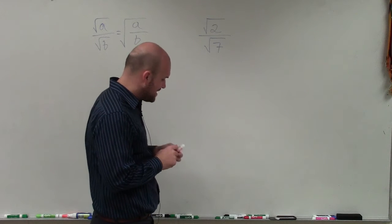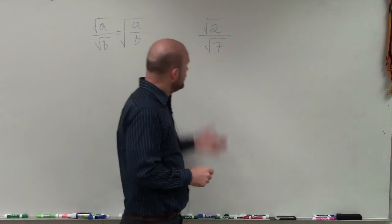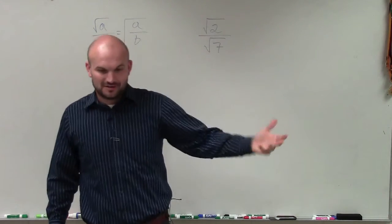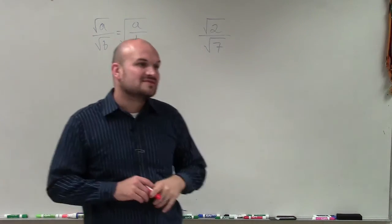So to simplify this by rationalizing the denominator, we're going to want to get our denominator to not have a radical in it, not have the square root of 7.